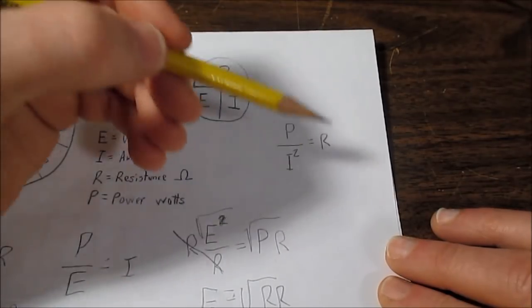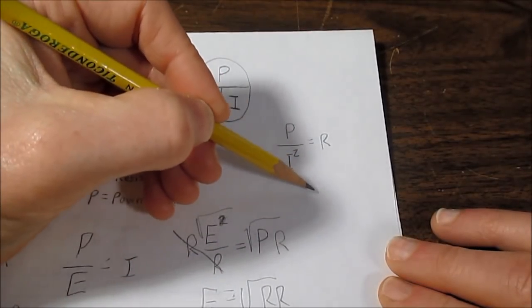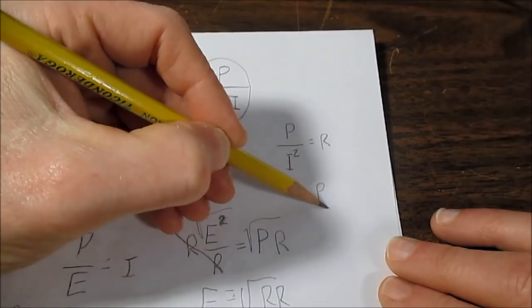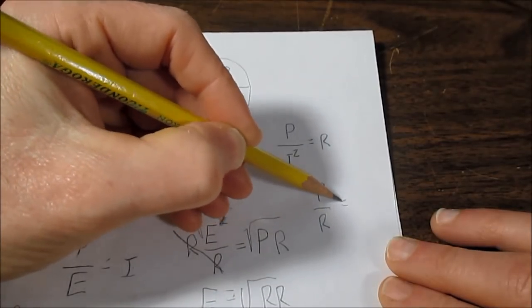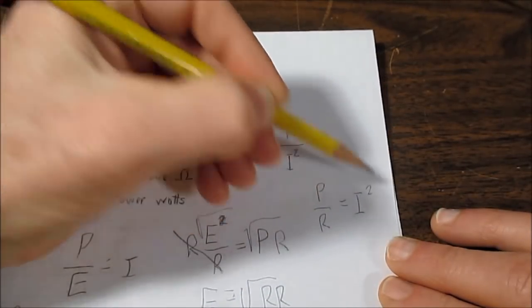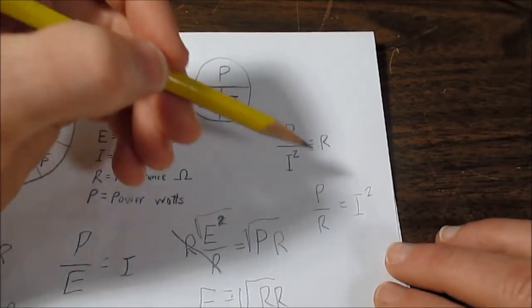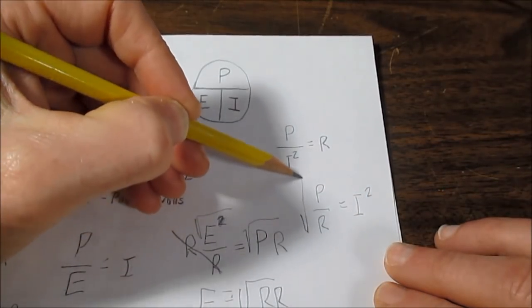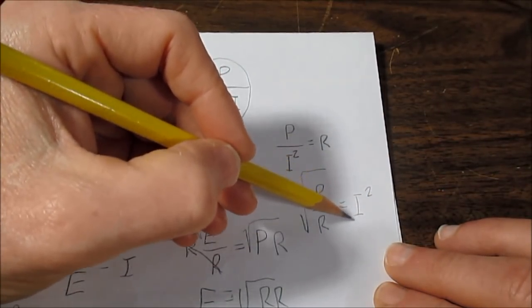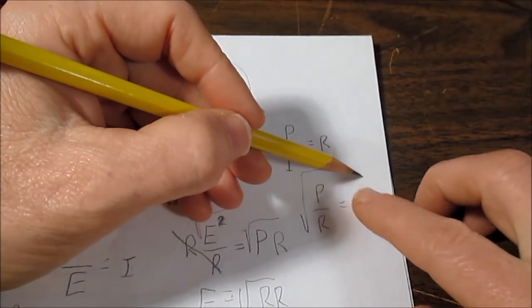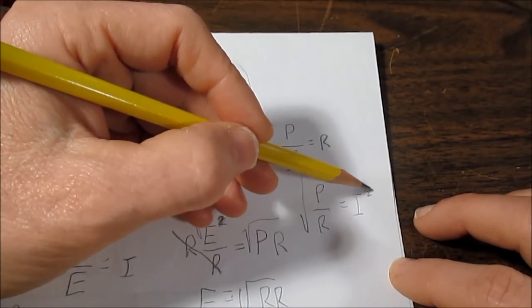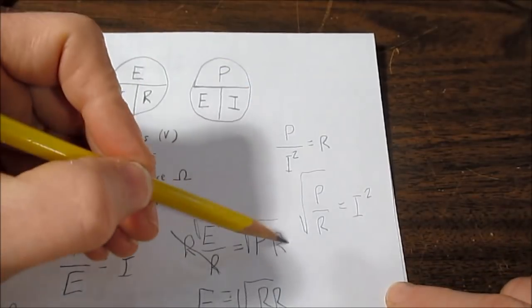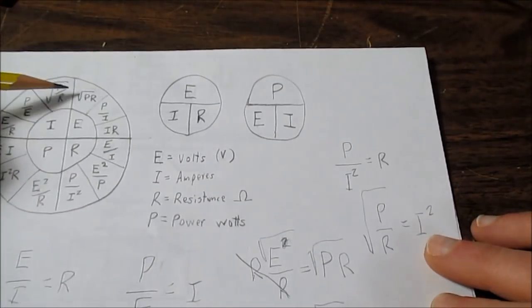So let's try that. So if we put power, resistance, but we have current squared over here because we flip-flopped them. So what we have to do is take the square root of both sides. And if we take the square root here, we can cancel it because it's squared. So we end up with this equation here.